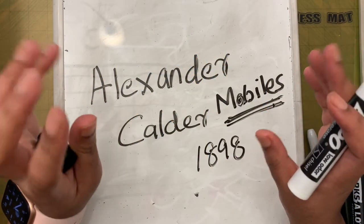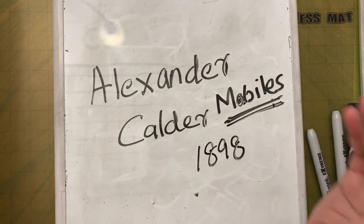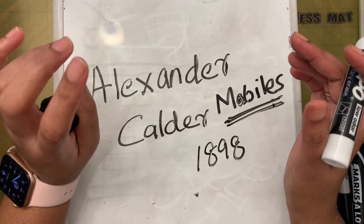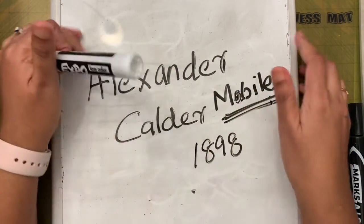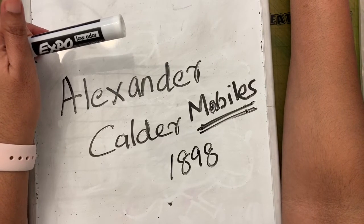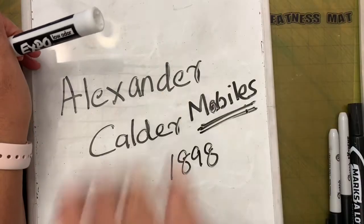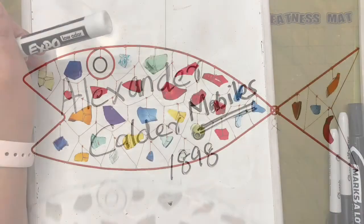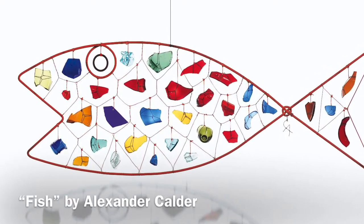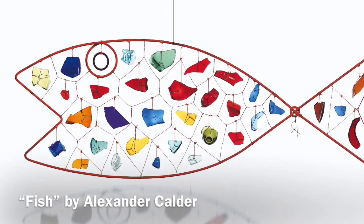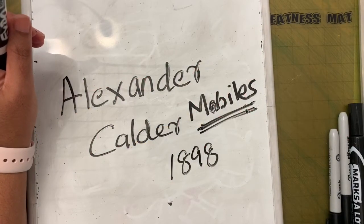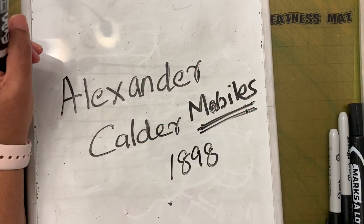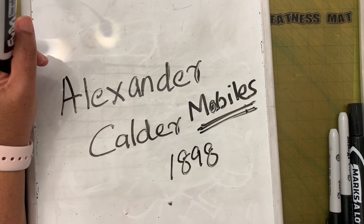Mobiles hang and move. Calder made a famous mobile in the form of a fish. I'll put a picture of it here. What we're going to do is make our art today like Alexander Calder's fish mobile.